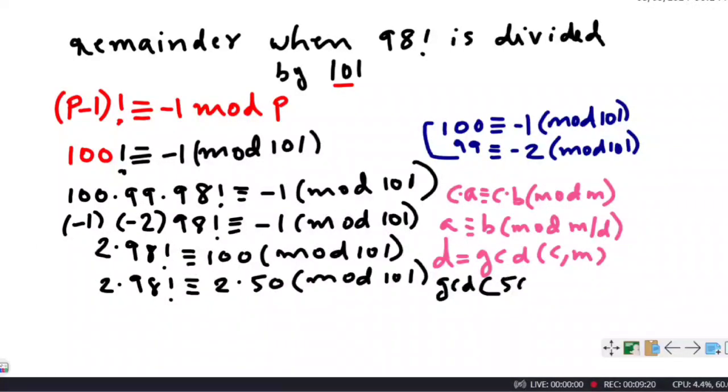The gcd of 50 and 101 is 1, so we will get 98 factorial congruent to 50 mod 101. Finally, we have 98 factorial congruent to 50 mod 101.